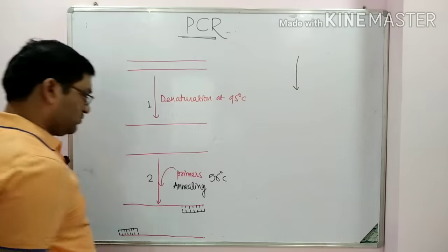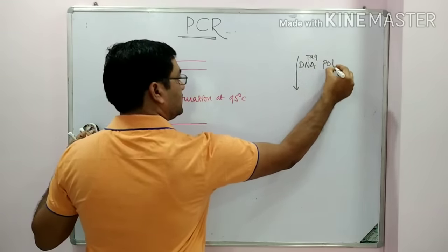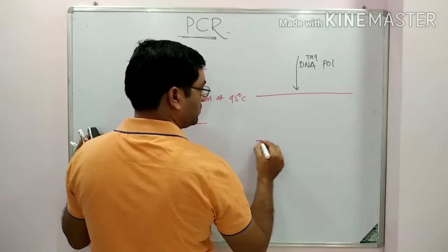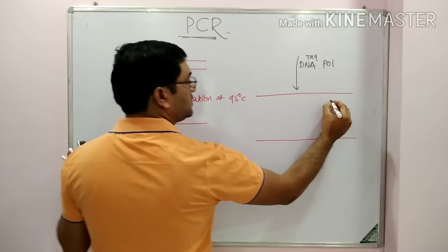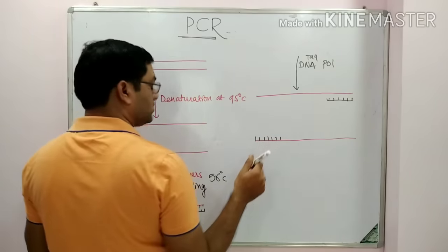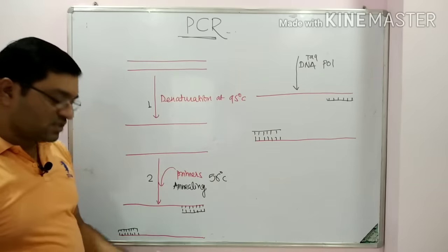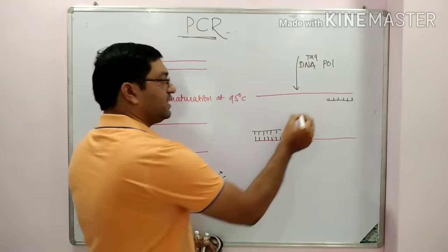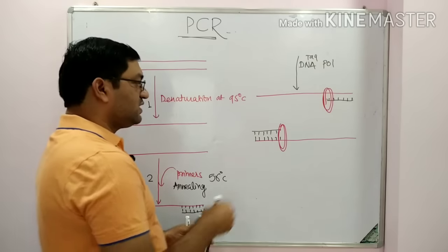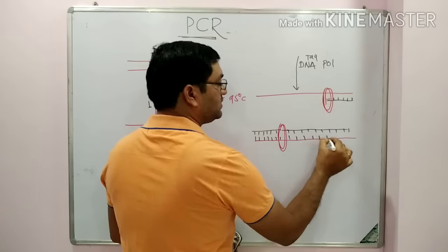In the third reaction — extension — we add Taq DNA polymerase. It causes extension of this oligonucleotide probe. These are the primers. Annealing occurs, and now synthesis will occur in the 5 prime to 3 prime direction by the DNA polymerase, causing extension of these primers and synthesis of new DNA on the existing segment of DNA.